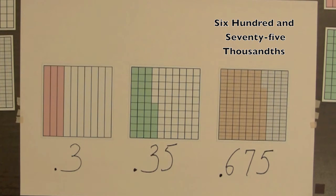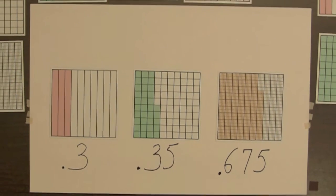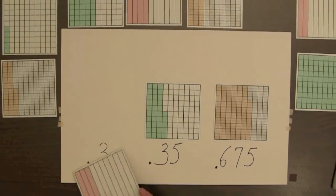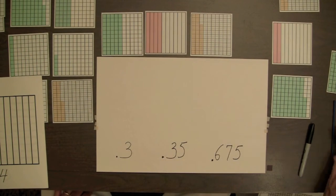One activity would be having students select decimal squares and write the decimal for the shaded amount. Conversely, for a given decimal, students can shade a blank decimal square.